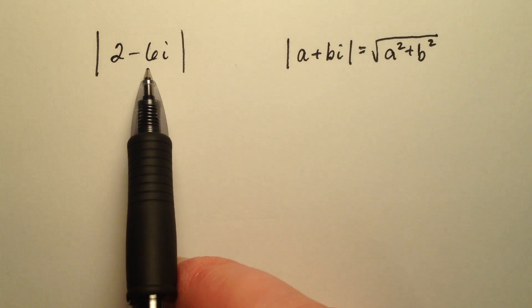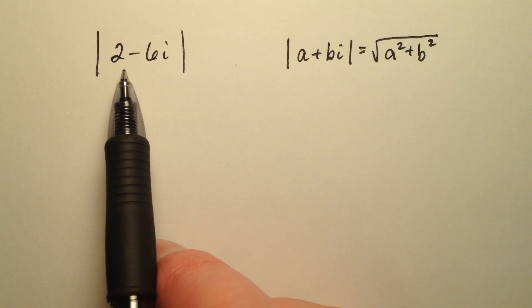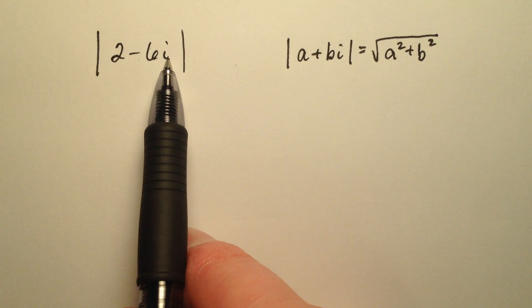Here I'm going to go ahead and find the absolute value of this complex number, 2 minus 6i.